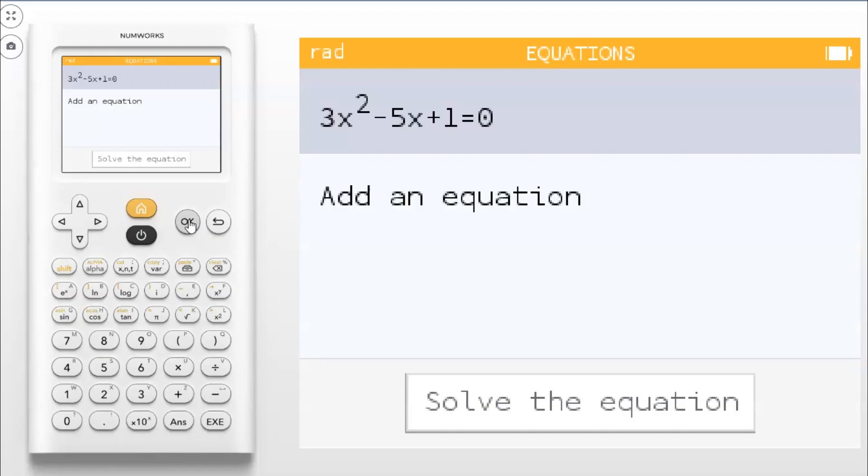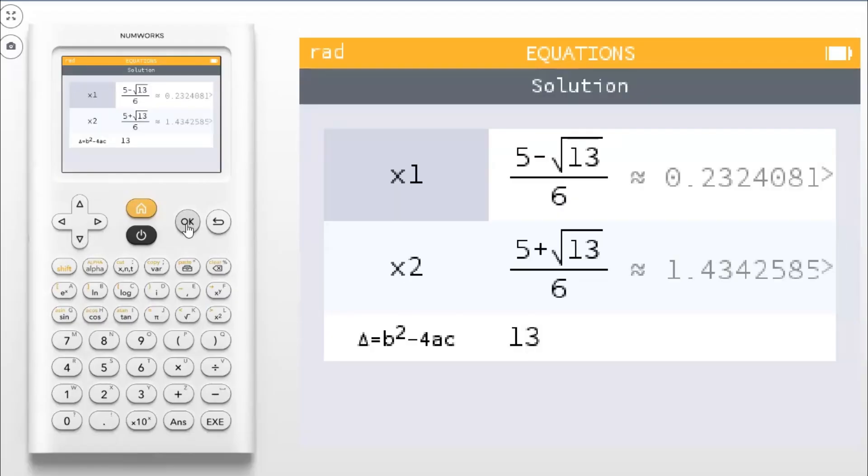And we have an equation solver app. This is going to be really helpful for AP pre-calculus or any math class. What you can do is add an equation. So I already have one added in here: 3x squared minus 5x plus 1 equals 0. You could literally type in any equation you want, and all you got to do is hit solve the equation.